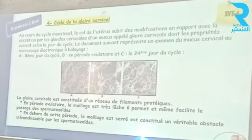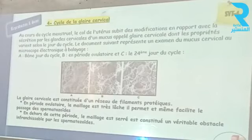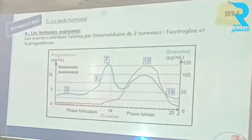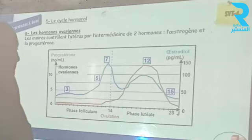Parallèlement à la fonction exocrine de formation des gamètes, on a la fonction endocrine. Les ovaires contrôlent l'utérus par l'intermédiaire des hormones appelées œstrogène et progestérone. La production de ces hormones est cyclique et caractérisée par des pics caractéristiques. L'estradiol présente deux pics : un pic important pendant la phase d'ovulation, et un pic moins important pendant la phase lutéale. La progestérone présente un pic important vers le 21e jour. La reconnaissance de ces hormones se fait par le repérage de ces pics caractéristiques.